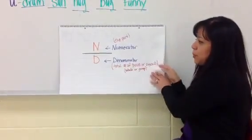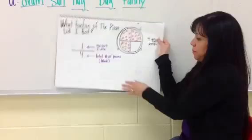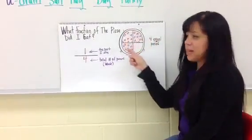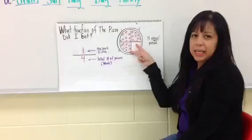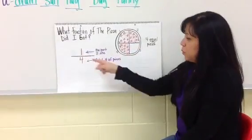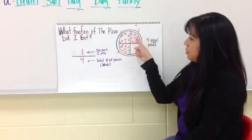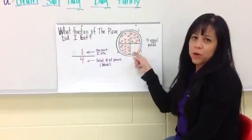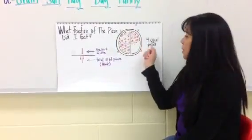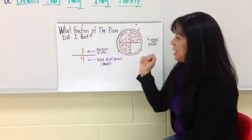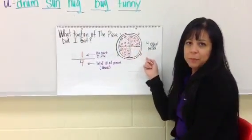Here's an example of what I need. Here is the pizza. The pizza is divided into four equal parts, which is our denominator. Total of pieces: one, two, three, four. Four equal parts of a whole pizza. What fraction of the pizza did I eat? One piece.